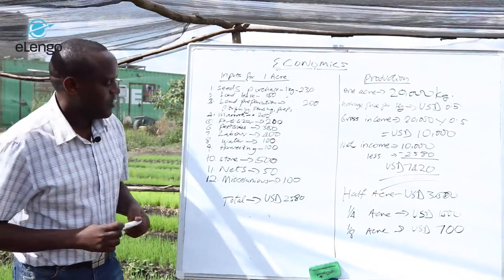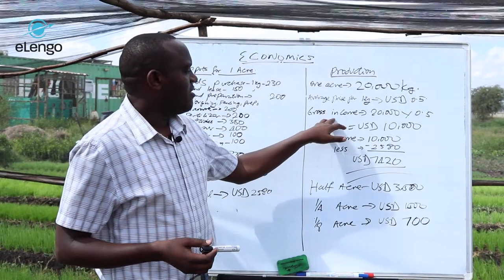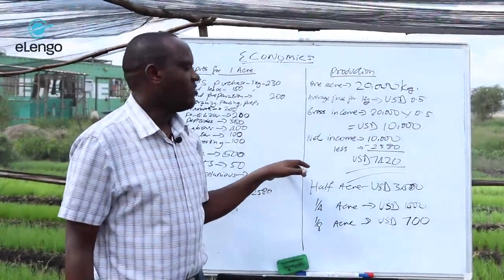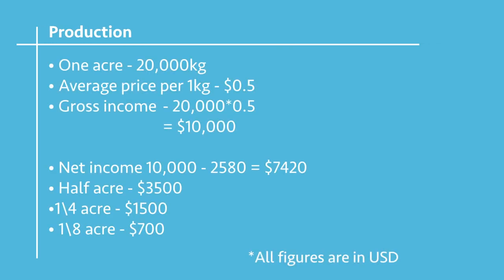All the inputs come to $2,580 US dollars. When you look at production pegged at 20,000 kgs on average — which may go up depending on your management — at an average price of $0.50 US dollars, your gross income will be $10,000 US dollars. When you subtract your input, your net income becomes $7,420 US dollars. This is for one acre. When you go to half an acre, your gross income goes down proportionally.